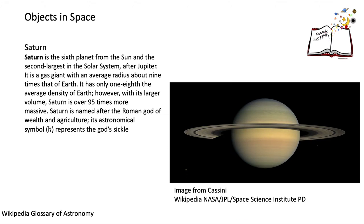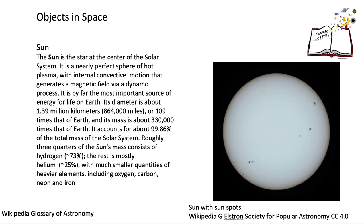Looking at Saturn, the sixth planet from the Sun — it has the famous ring system around it and is nine times the radius of the Earth. The Sun sits at the centre of our solar system and is an important energy source for every living thing on Earth, with over a hundred Earths fitting across its diameter.